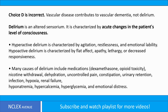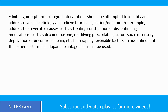Delirium is an altered sensorium characterized by acute changes in the patient's level of consciousness. Hyperactive delirium is characterized by agitation, restlessness, and emotional lability. Hypoactive delirium is characterized by flat affect, apathy, lethargy, or decreased responsiveness. Many causes of delirium include medications (dexamethasone and opioid toxicity), nicotine withdrawal, dehydration, uncontrolled pain, constipation, urinary retention, infection, hypoxia, renal failure, hyponatremia, hypercalcemia, hyperglycemia, and emotional distress. Non-pharmacological interventions should be attempted first to identify and address reversible etiology and relieve terminal agitation or delirium — for example, treating constipation, discontinuing medications such as dexamethasone, or modifying precipitating factors such as sensory deprivation or uncontrolled pain. If no rapidly reversible factors are identified or if the patient is terminal, dopamine antagonists must be used.